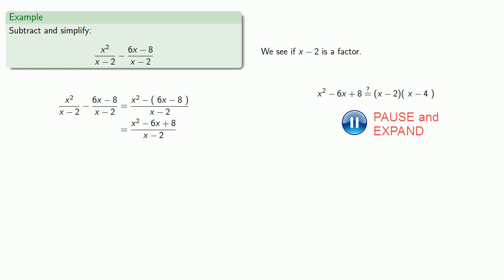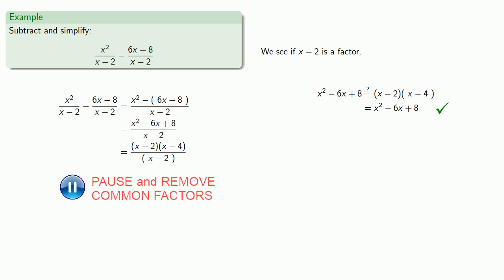We check it out, and we see that the factorization does work. And so our numerator is x minus 2 times x minus 4. We can remove the common factor and be left with our final answer, x minus 4.